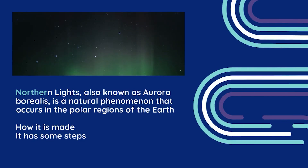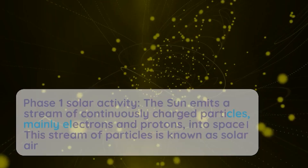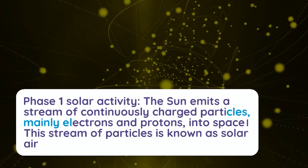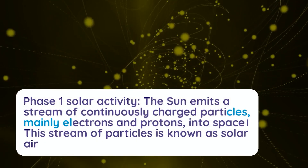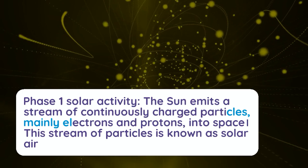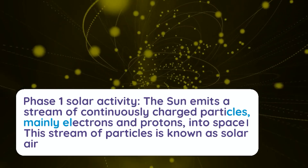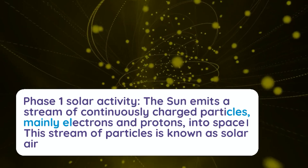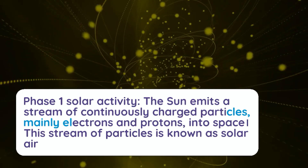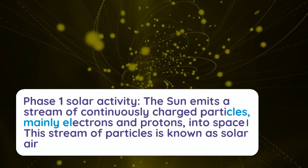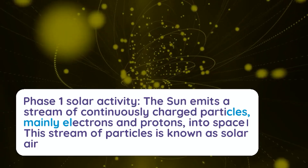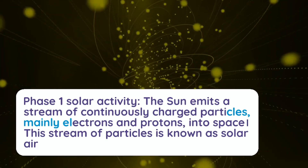How is it made? It has some steps. Phase 1 is Solar Activity: the Sun emits a stream of continuously charged particles, mainly electrons and protons, into space. This stream of particles is known as solar wind.